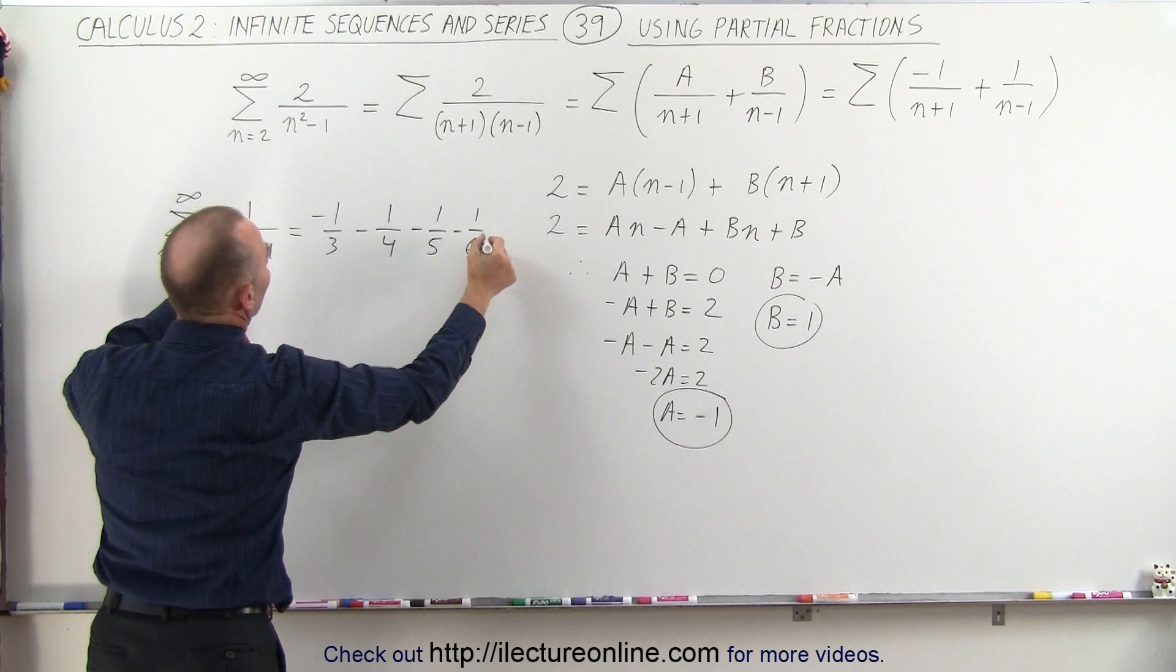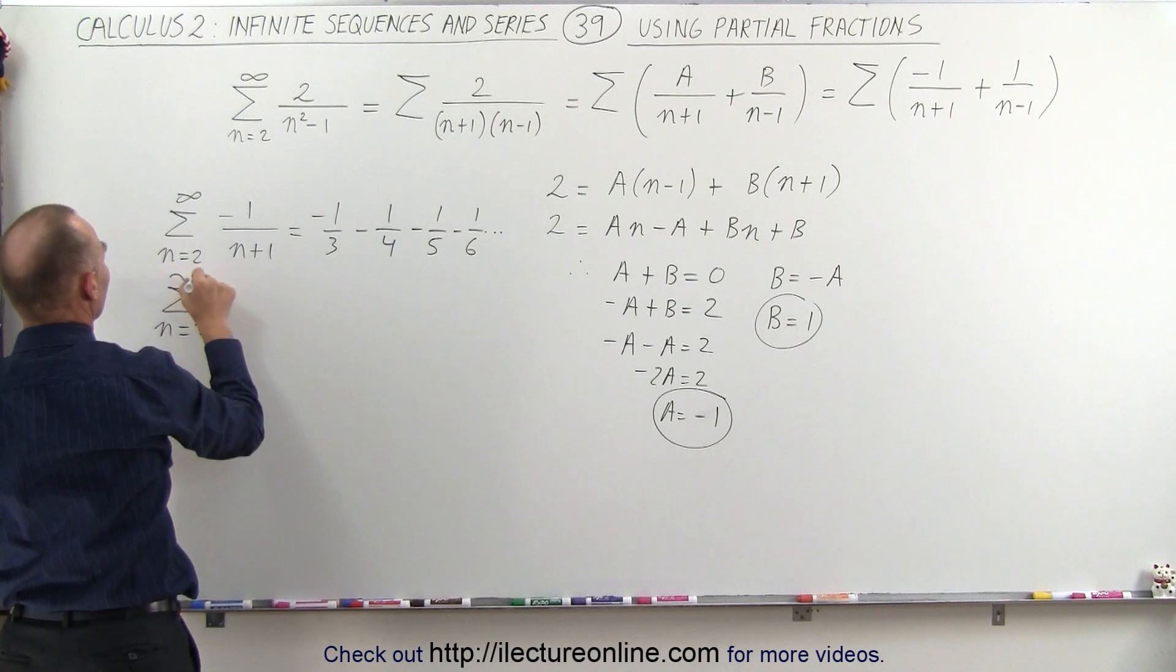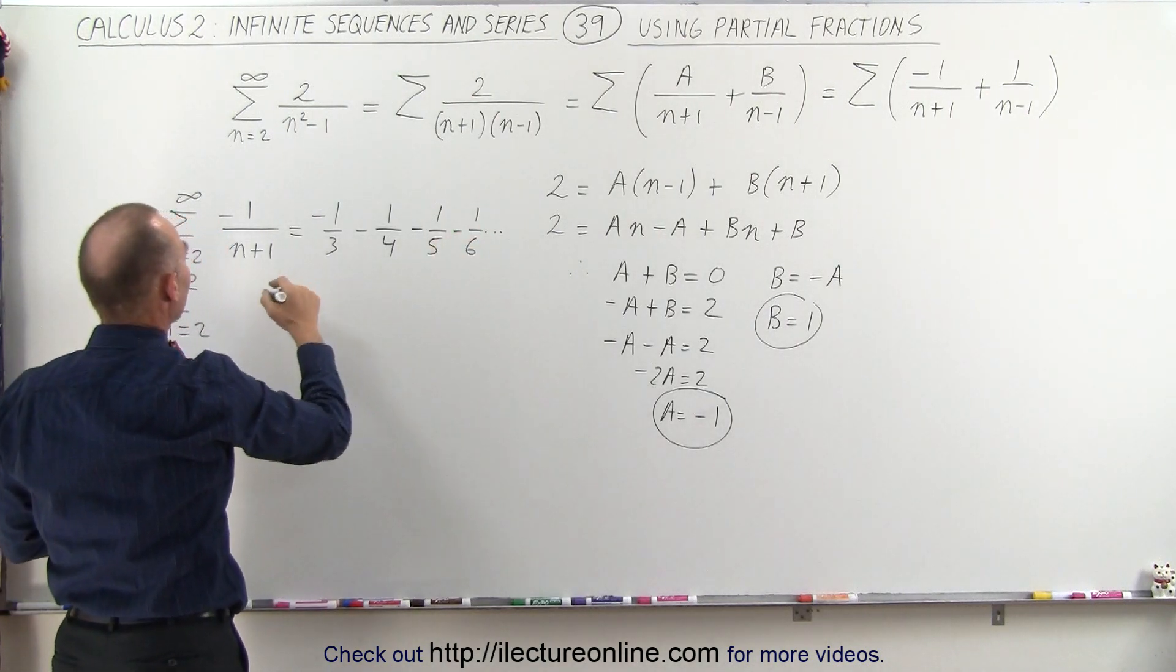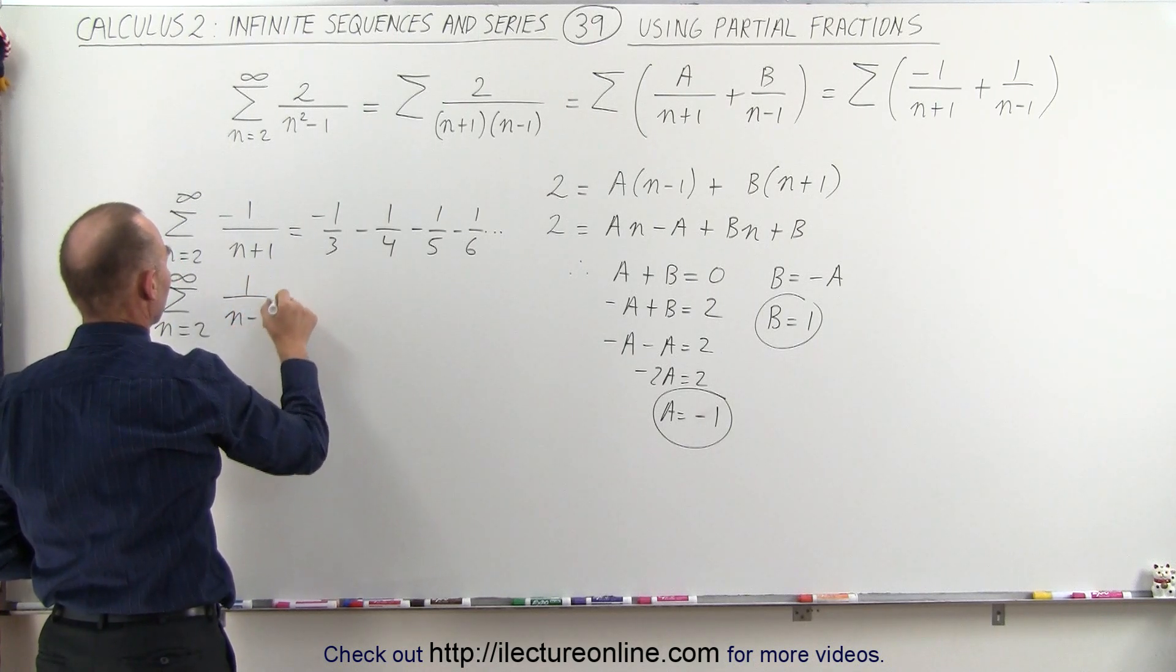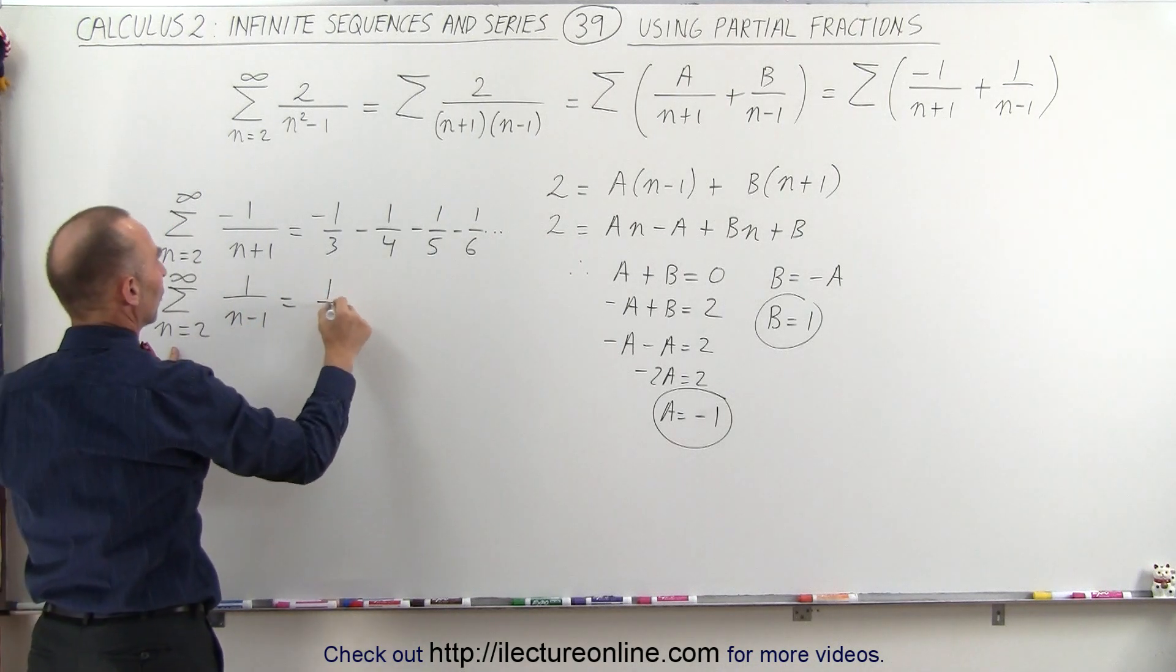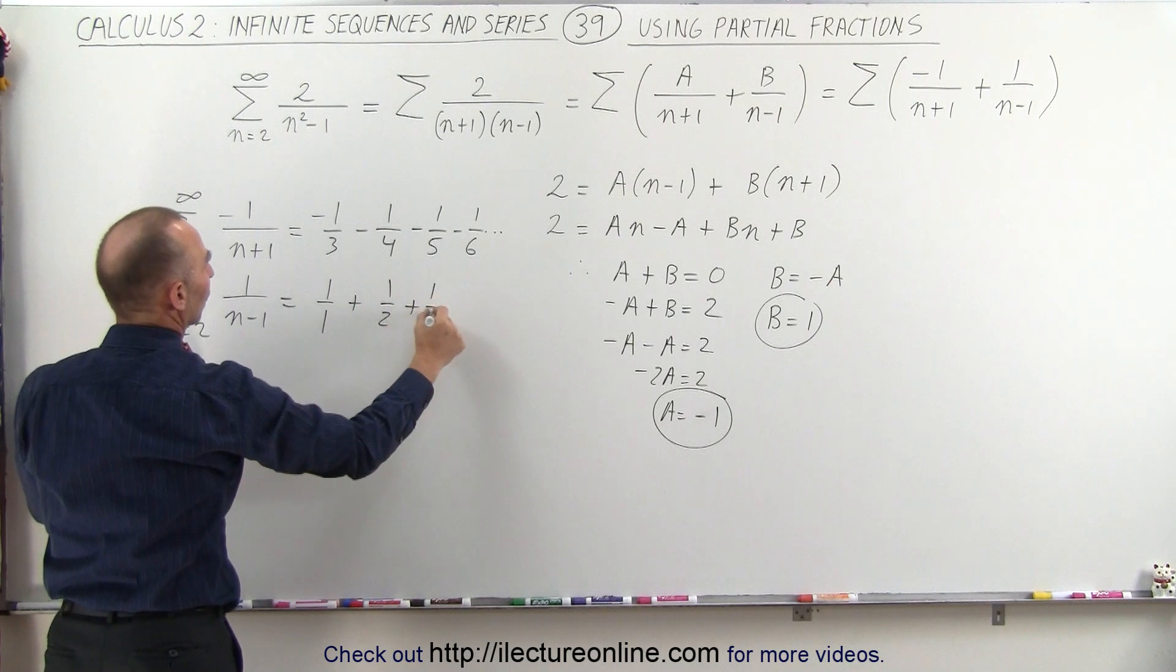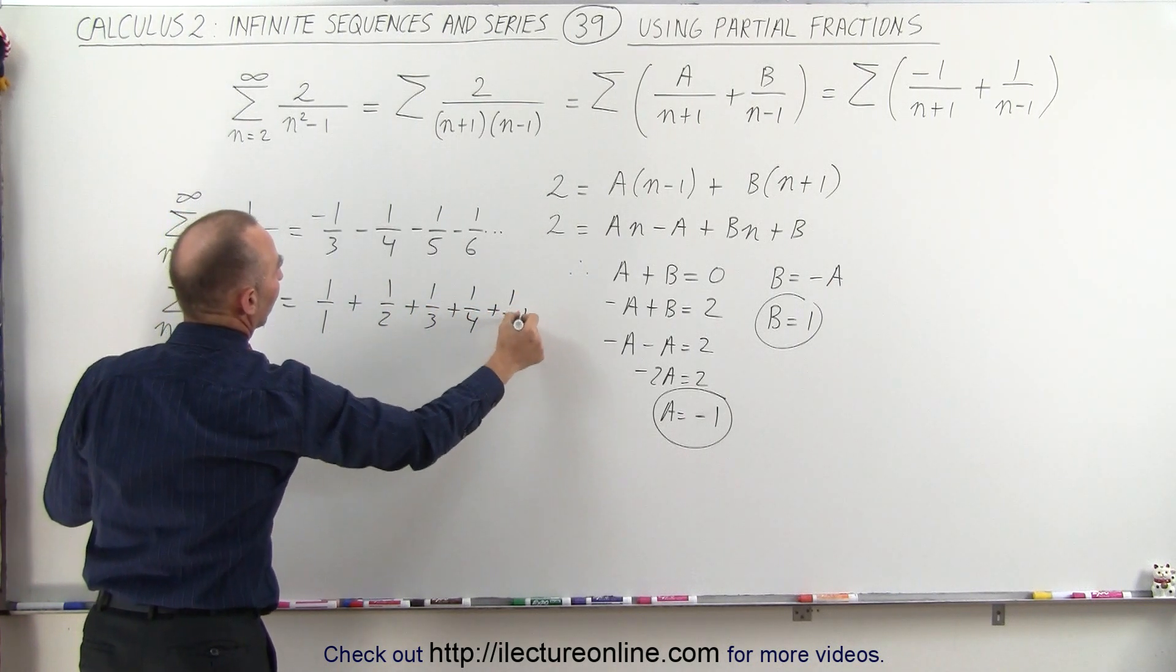And then, the second sum, we get from n equals 2 to infinity. Now, we take the second one, which is 1 over n minus 1. Starting with n equals 2, we get 1 over 1 plus 1 over 2 plus 1 over 3 plus 1 over 4 plus 1 over 5, and so forth.